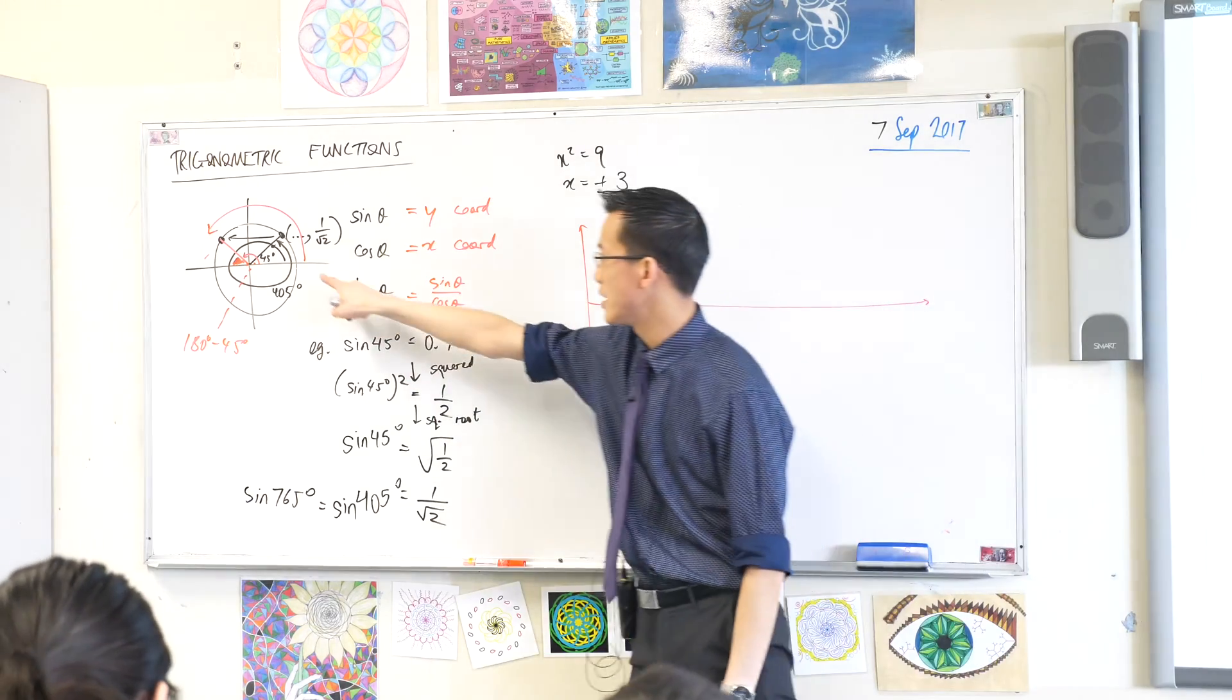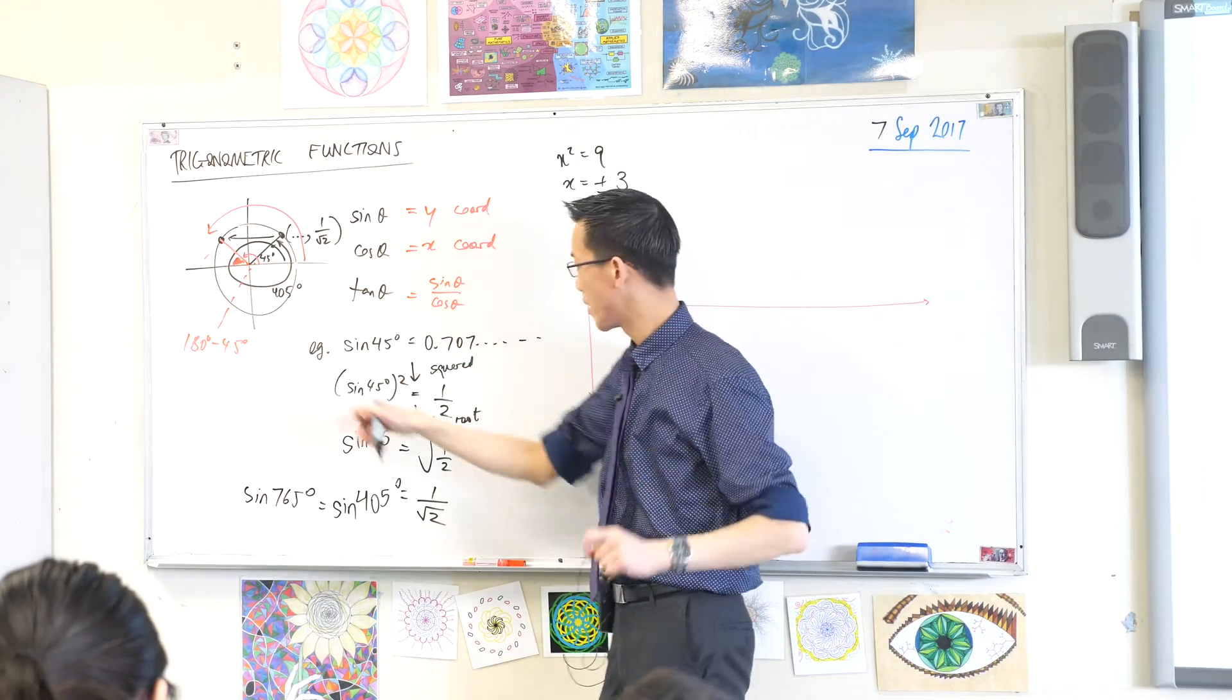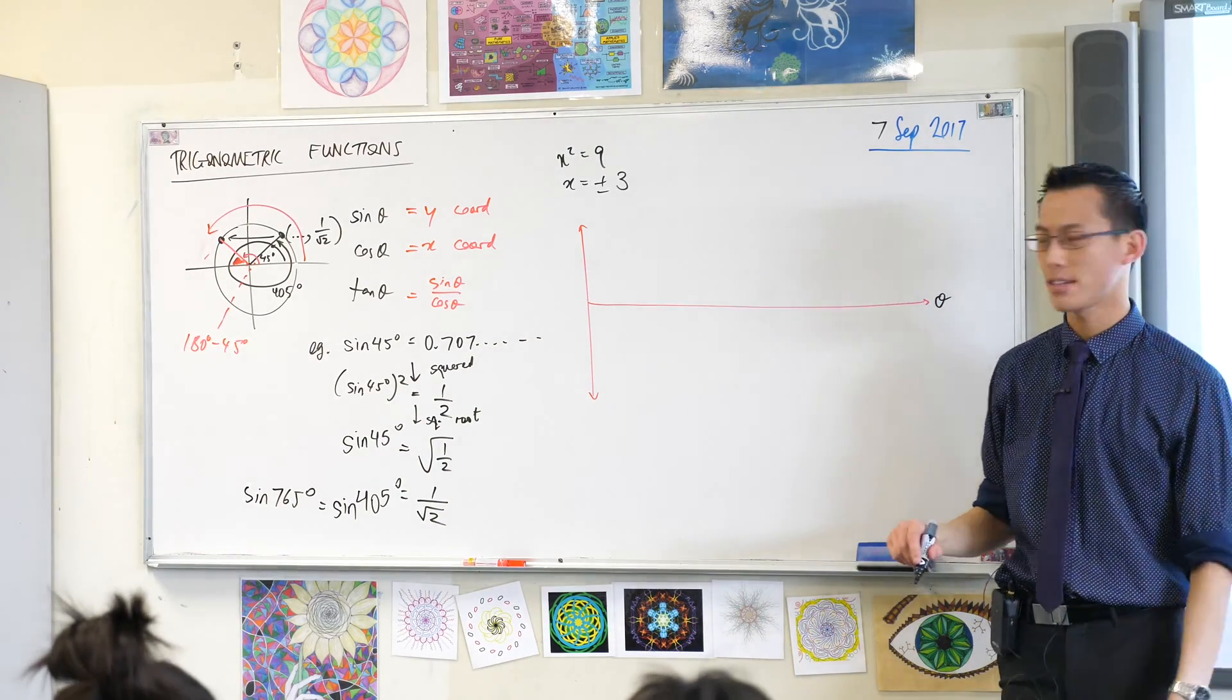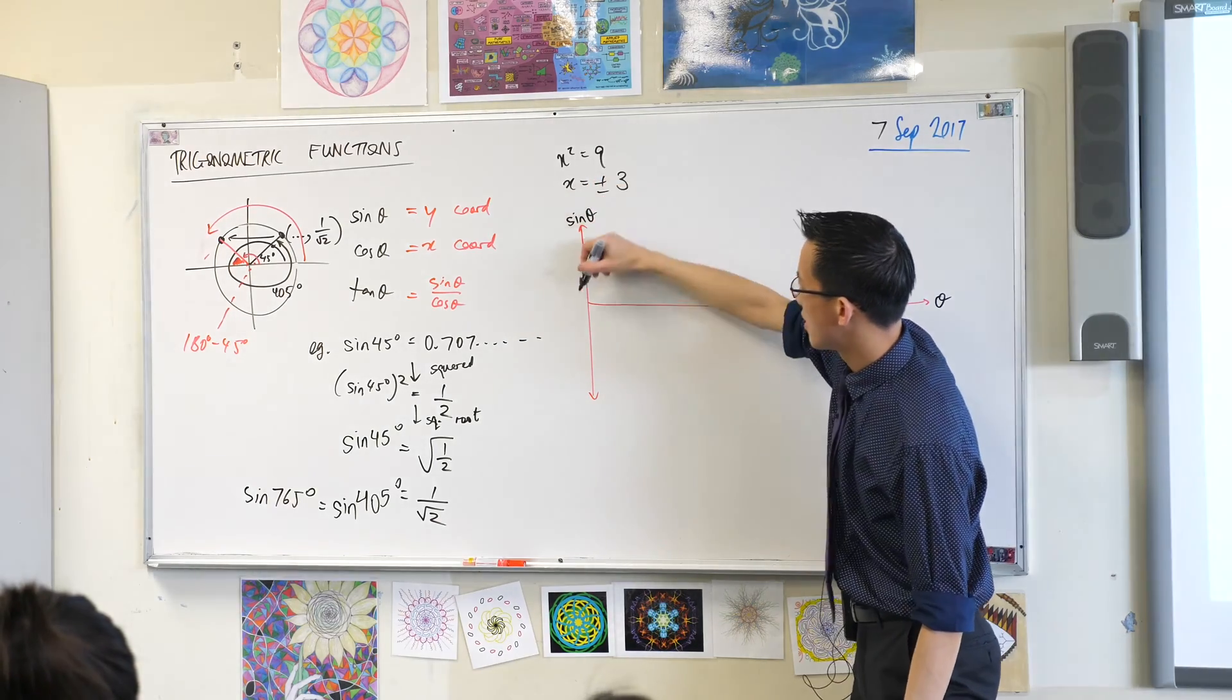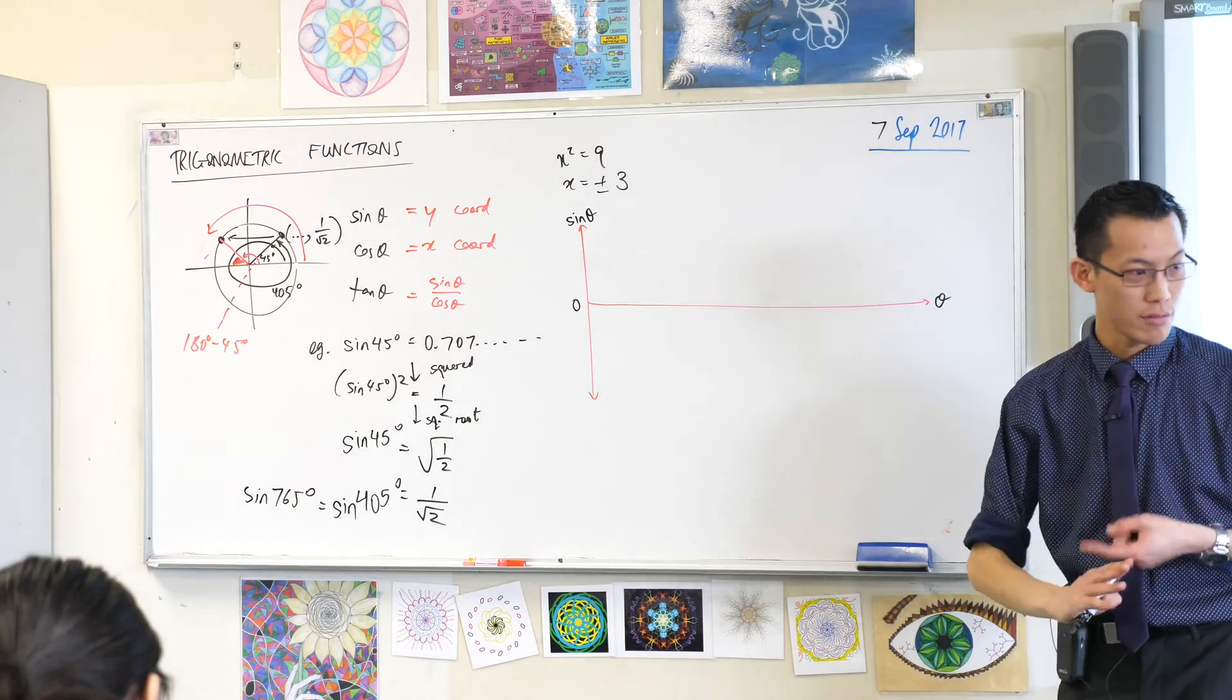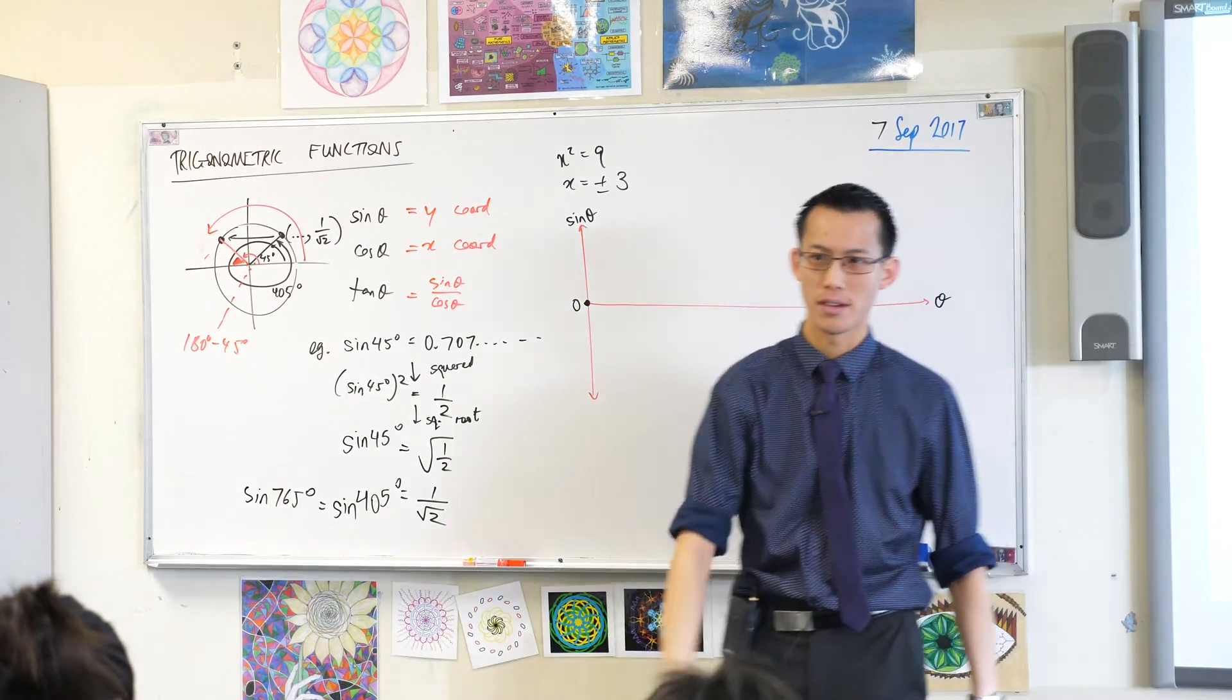Sine zero, sine zero degrees, what's the y-coordinate here? You know this from last time, it's still zero. So if I have this as the theta axis and this is the sine theta axis, when theta is zero, when the angle is zero, sine theta is also zero.